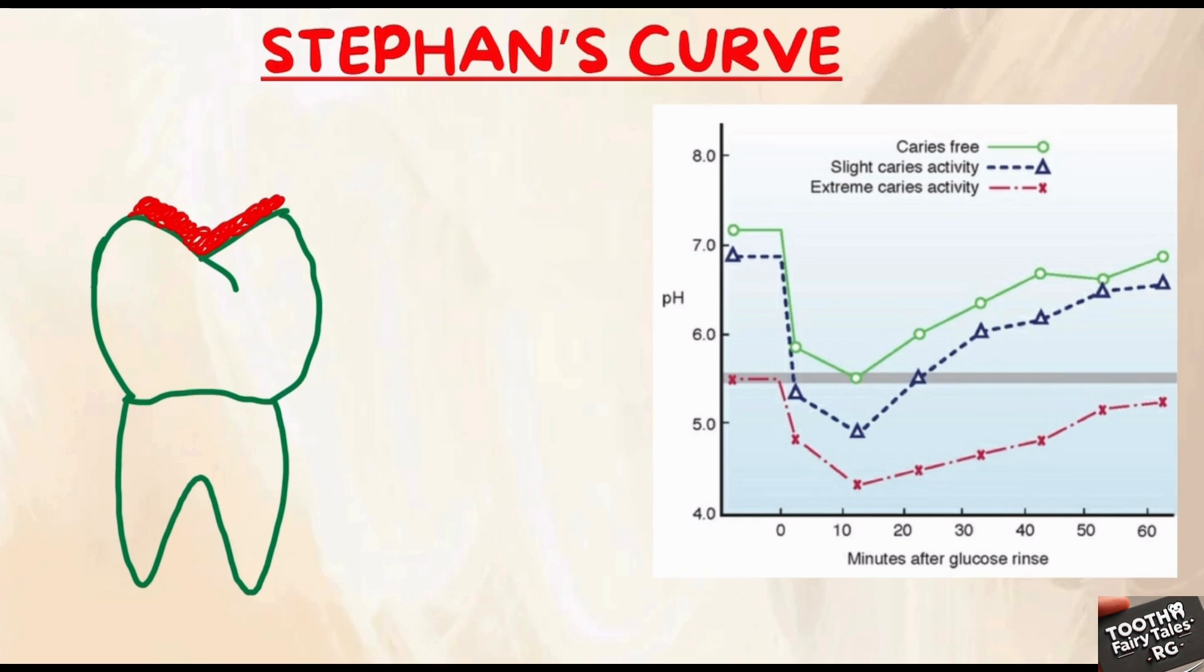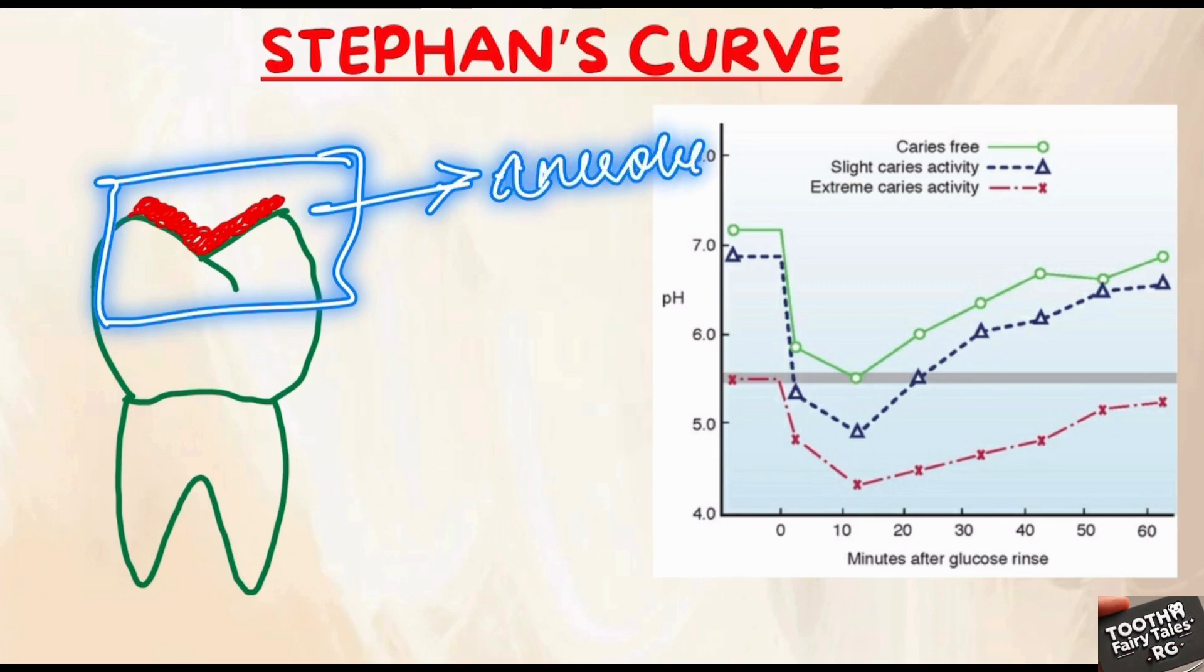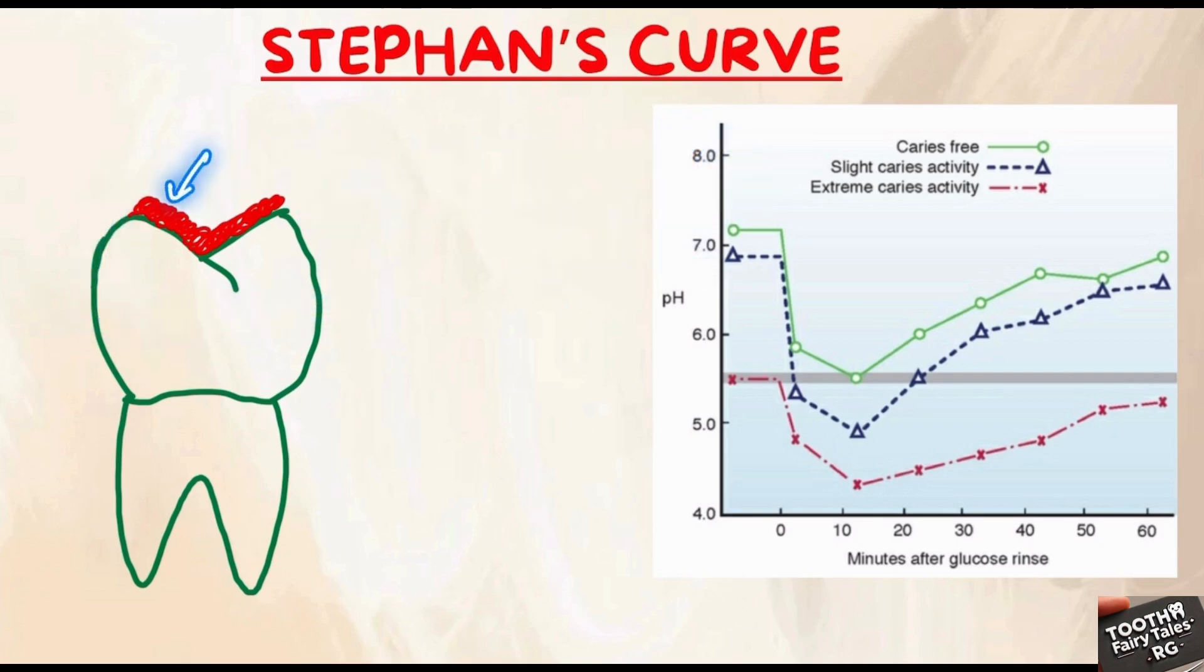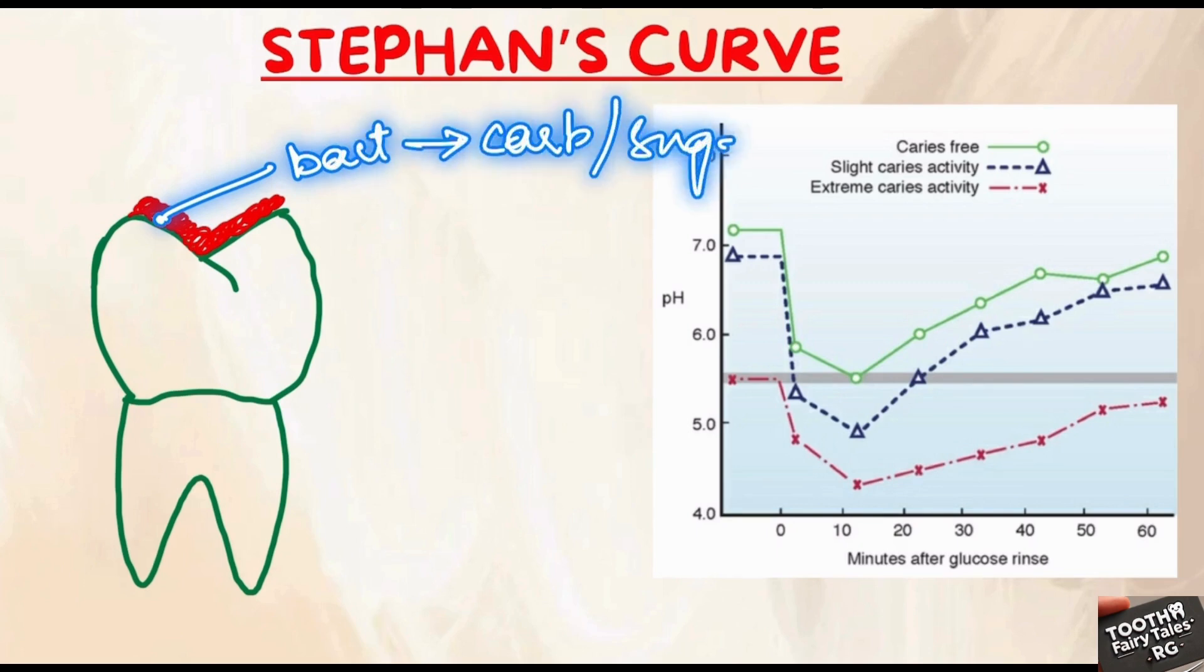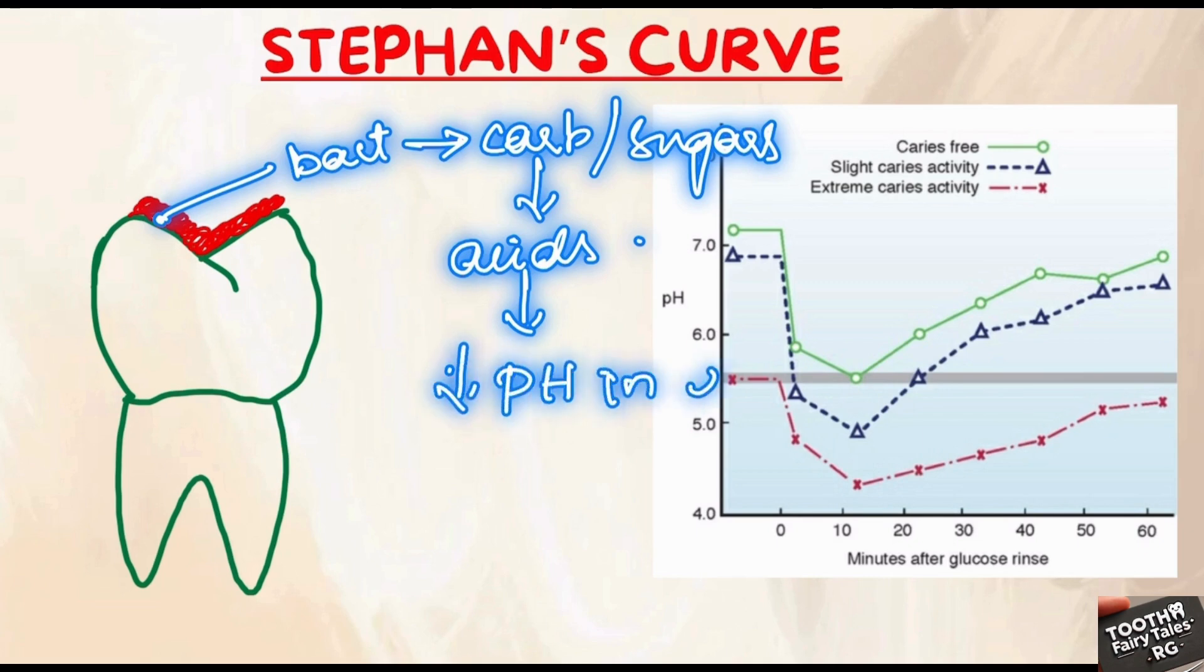It is the bacteria which are present in the plaque that are metabolically active, especially in the anaerobic environment. When carbohydrates reach the dental plaque, the bacteria present in the dental plaque take up the carbohydrates or sugars and produce acids.